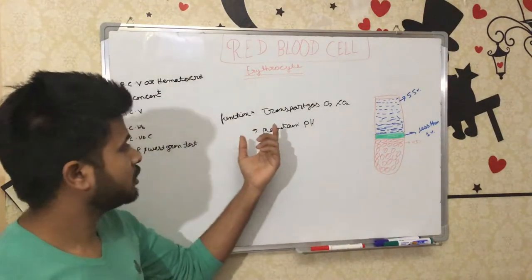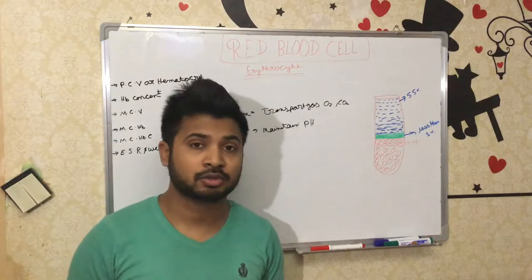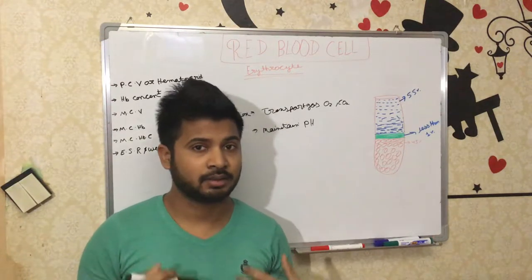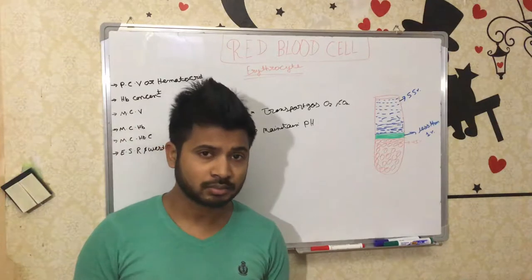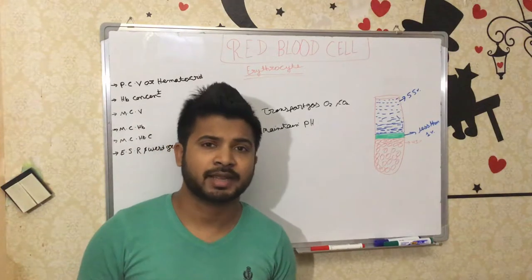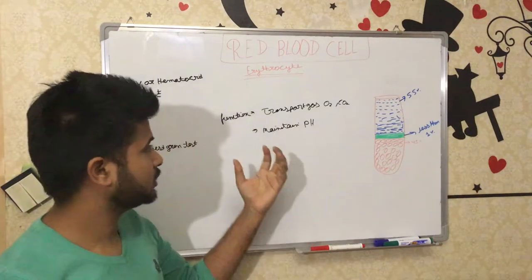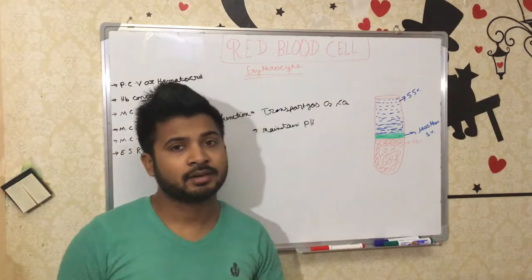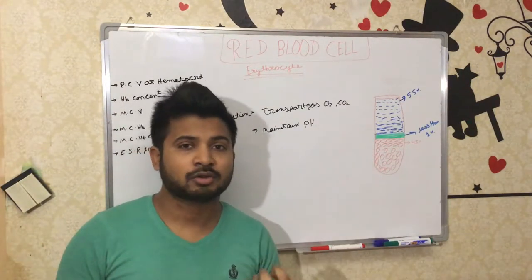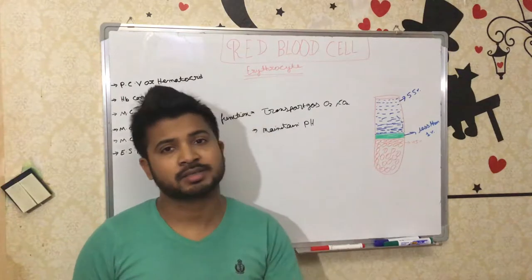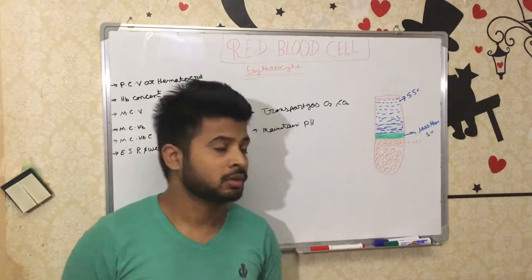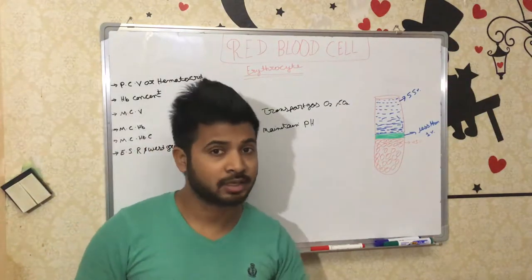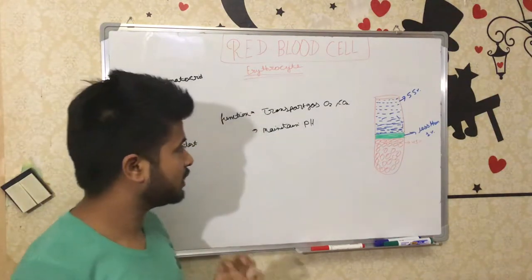The RBC transports oxygen and carbon dioxide because it contains hemoglobin. Hemoglobin transports oxygen from the lungs to the tissue, and as a waste product it also binds carbon dioxide and transports it from tissue back to the lungs. So we can say the RBC transports hemoglobin, and hemoglobin transports oxygen and carbon dioxide. We will discuss everything in detail step by step.